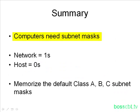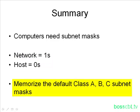To summarize everything we covered: computers and routers need subnet masks in order to figure out the structure of the IP address — the host portion and the network portion. When we look at the subnet mask in binary, the network portion is made up of ones and the host portion is made up of zeros. Memorize the default class A, B, and C subnet masks — you need to know them off the top of your head without any delay. That's how fundamental they are to your understanding of IP addressing. Going further, we'll get into the working details of how we create and modify these. That's the introduction to subnet masks. Thanks for watching.